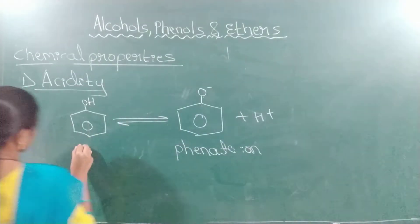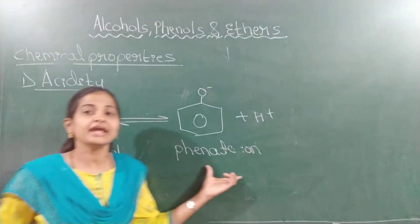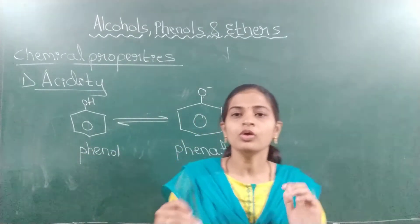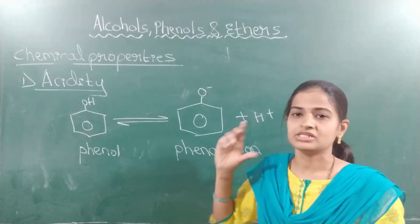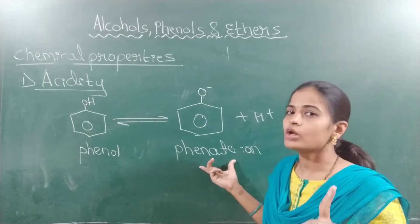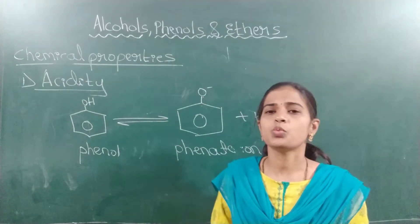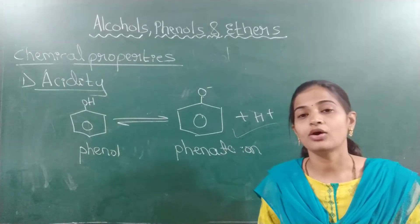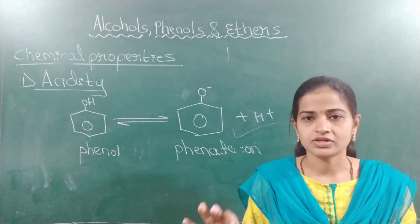Phenol was there — phenol is stable, no doubt. But the phenate ion is more stable than phenol. Therefore, to attain stability, phenol releases the proton in the presence of water to form the phenate ion. How can we say that phenate ion is more stable than phenol? By writing their resonance structures. Greater the number of resonance structures, greater is the stability.